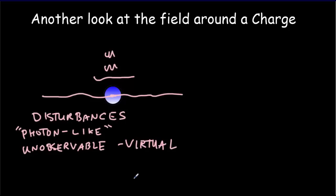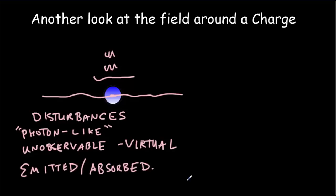What's key about these disturbances is they don't last — the disturbance comes and goes. It kind of pops into existence and then disappears, or we could say it was emitted by the negative charge and then absorbed. So our electric field is composed of these unobservable, photon-like disturbances.